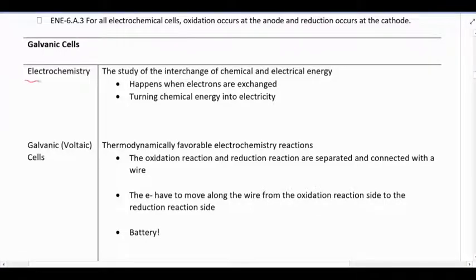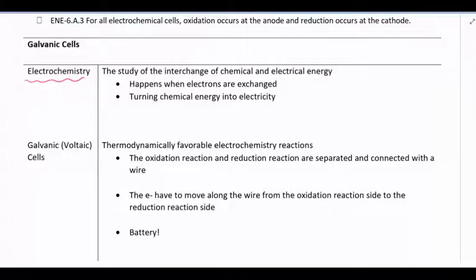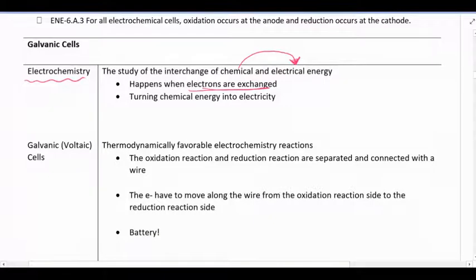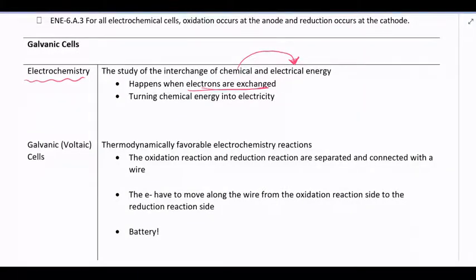We're going to start looking at electrochemistry. It might take a little while for you to see how electrochemistry ties into thermodynamics, but it does. This is an excellent example of a place where thermodynamics is easily applied, so just give it a little bit of time and we'll see these two things get pulled together. Electrochemistry is the study of the interchange of chemical energy into electrical energy. When we cause electricity to be produced from chemicals, electrons are exchanged between various species — between atoms and ions or between compounds — and we can separate these two species and get the electrons to move through a wire, thus producing electricity. So we can turn that chemical energy into electrical energy.